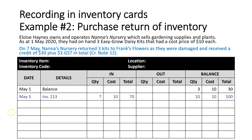Transaction two: on May 7, Nana's Nursery returned three kits to Frank's Flowers because they were damaged, and received a credit. The source document is Credit Note 12. Because we've returned these to the supplier, they are going out of our business, so we put three in the Out column at $10, totalling $30. We then update the balance, which is now seven items at $10, with a total of $70.